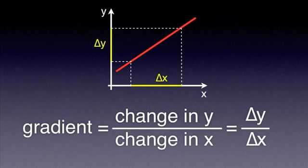Gradient is equal to change in y over change in x, or for short, delta y over delta x. Note that in the case of a linear graph, the gradient is constant, and therefore we can use any two points on the line to calculate it.